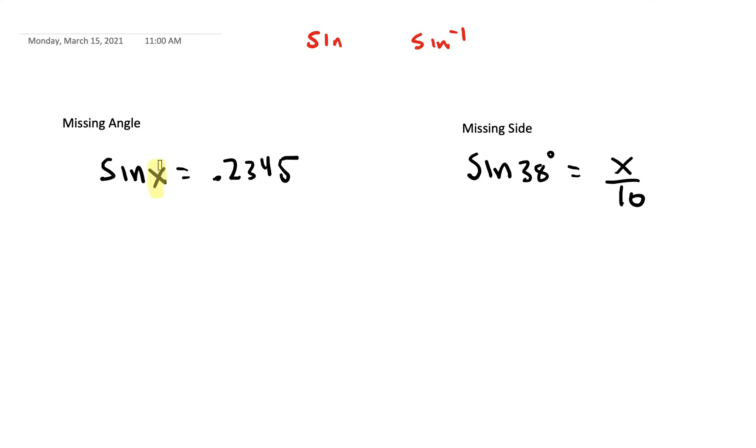So we can see the difference. One has a variable next to the sine, and we're going to have to separate that. The other one already has the angle degree, so x is already separated from the word. There's no x connected to sine or cosine or tangent.